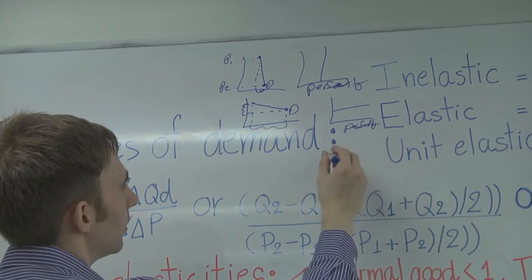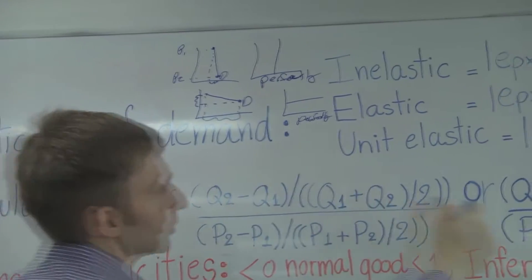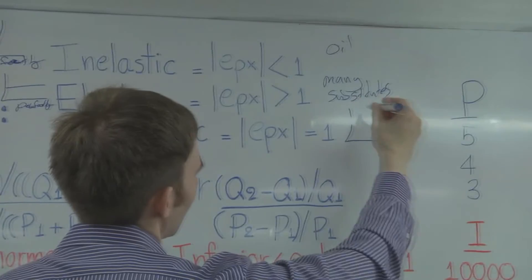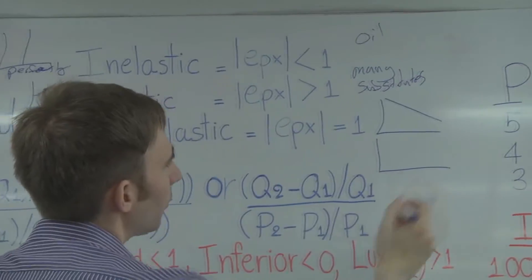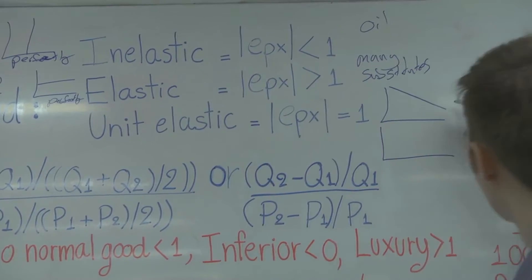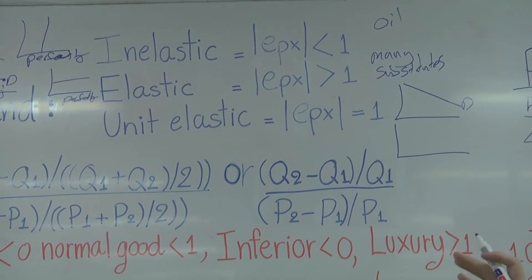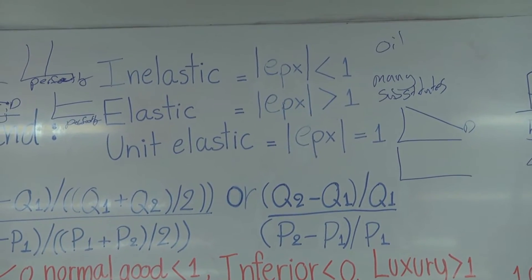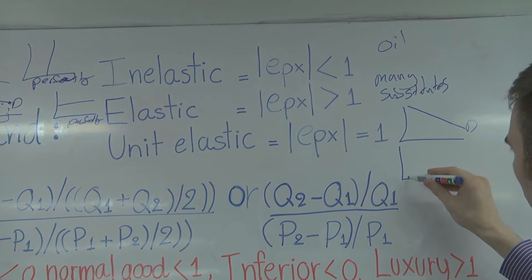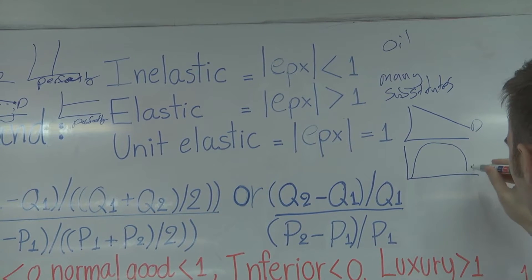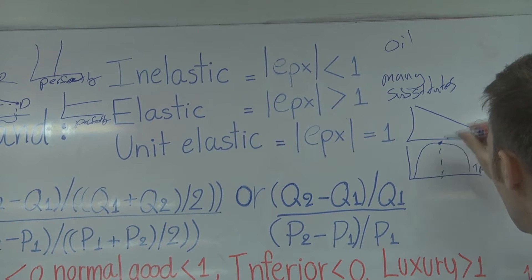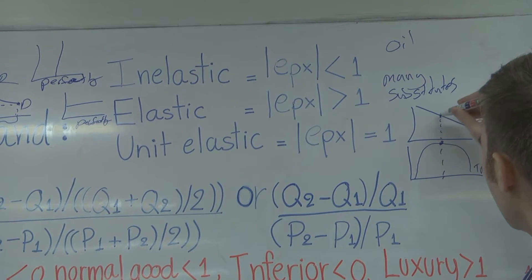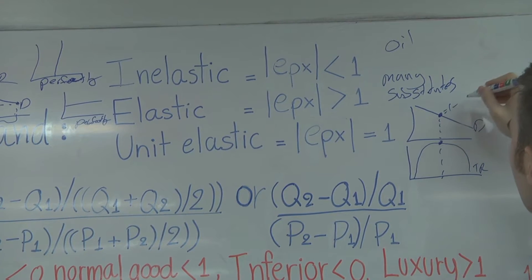Let me graph it here. If I were to graph my revenue, my total revenue would look something like this. So at the very top of my total revenue, here. So this would be equals one. This would be unit elastic.